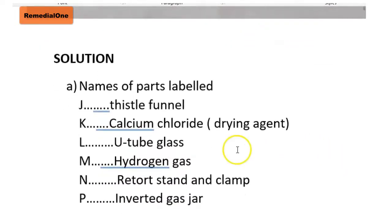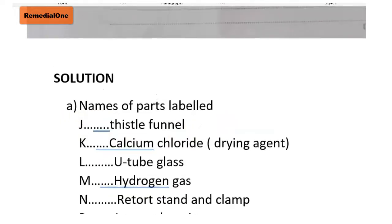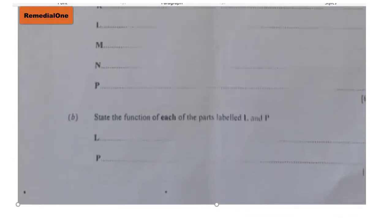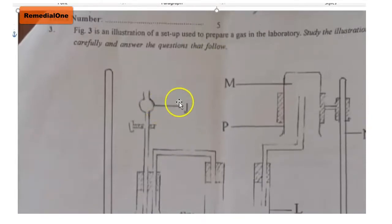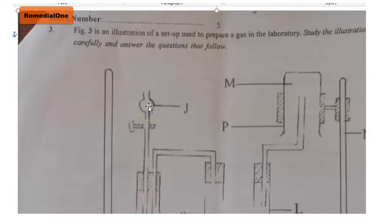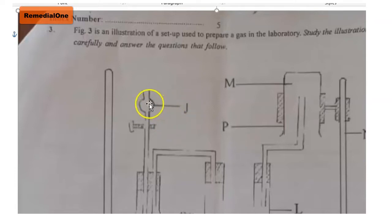The first part — names of the parts labeled. Part J is the thistle funnel. Going back to the diagram, we can see the thistle funnel here. The function of the thistle funnel is that it is used to deliver the acid into the conical flask, even though you were not asked to state that function — but in case you are asked in a future question, that would be the answer.